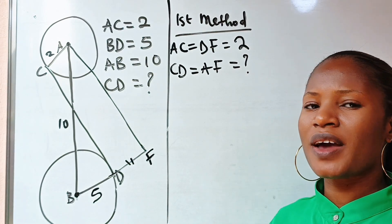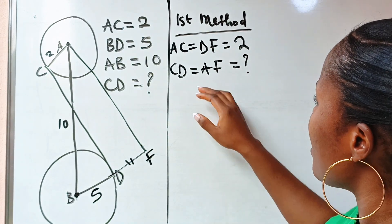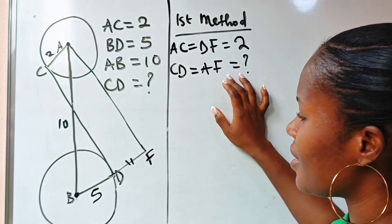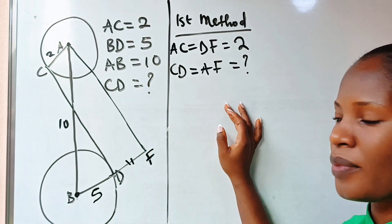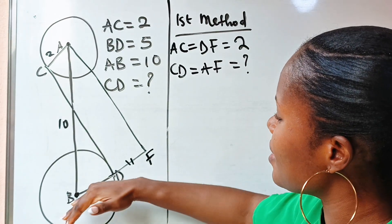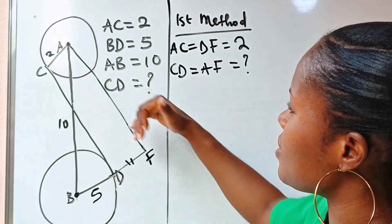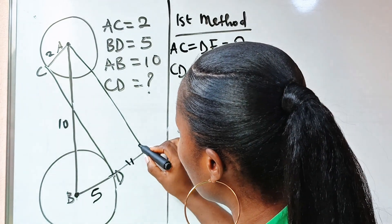So that simply means that if we are able to get our AF, then we have gotten our CD. Now remember that since this is parallel to this and this is parallel to this, then this is definitely a right angle.